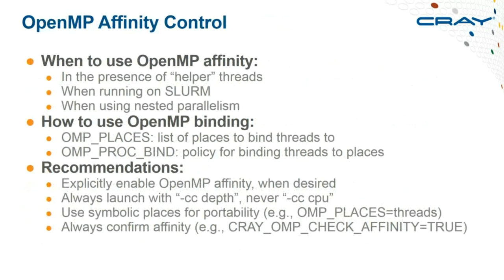On Archer, process affinity is handled by Alps when your job runs. The 'aprun' command offers options like '-cc' to bind to a specific CPU list, bind to the set of CPUs defined by your thread count, or bind to a NUMA region. An alternative is using OpenMP's affinity facility via environment variables. This can be particularly useful if you're using Intel OpenMP with helper threads, where Alps binding gets complicated — the OpenMP approach provides a portable alternative.